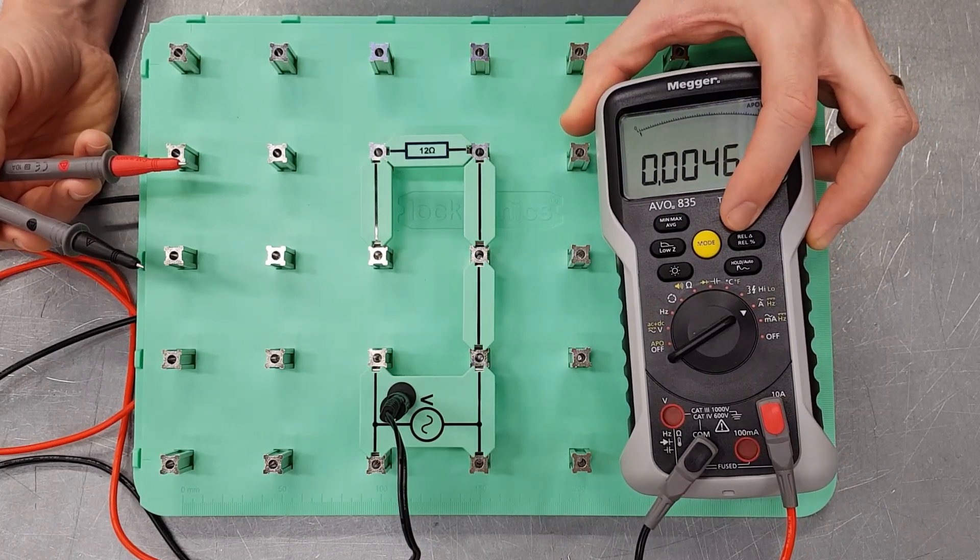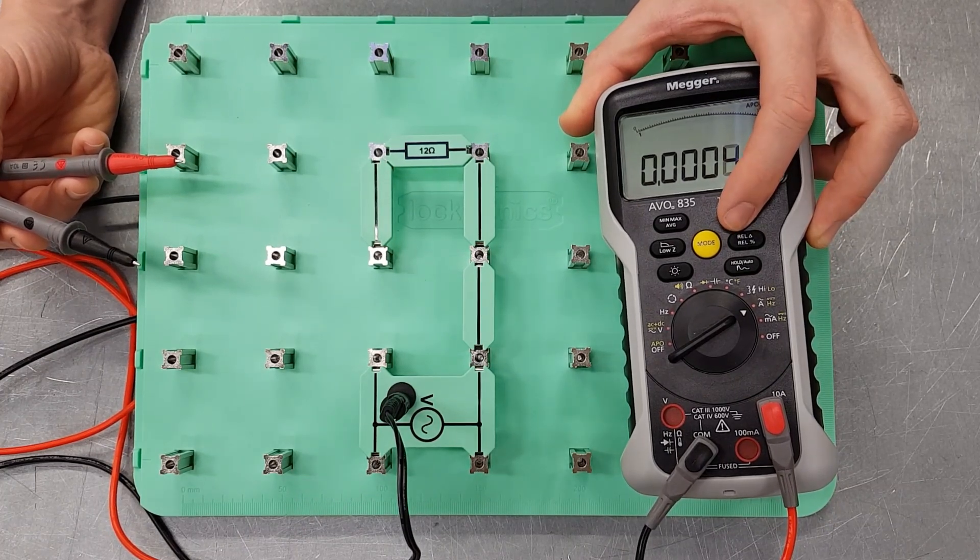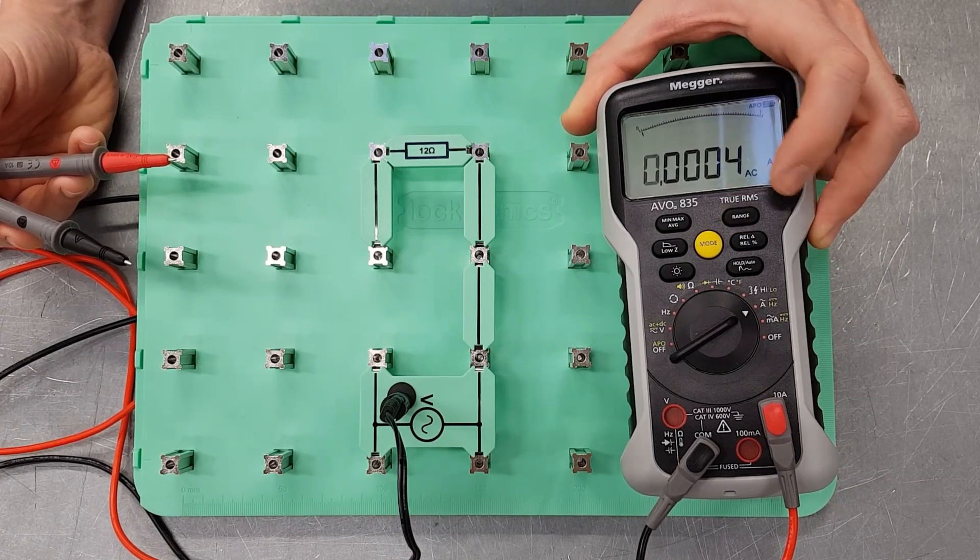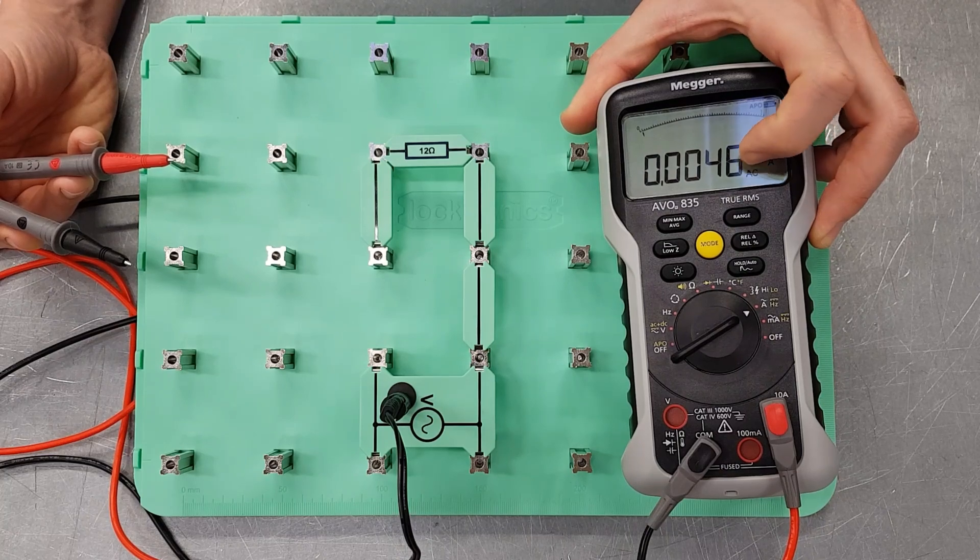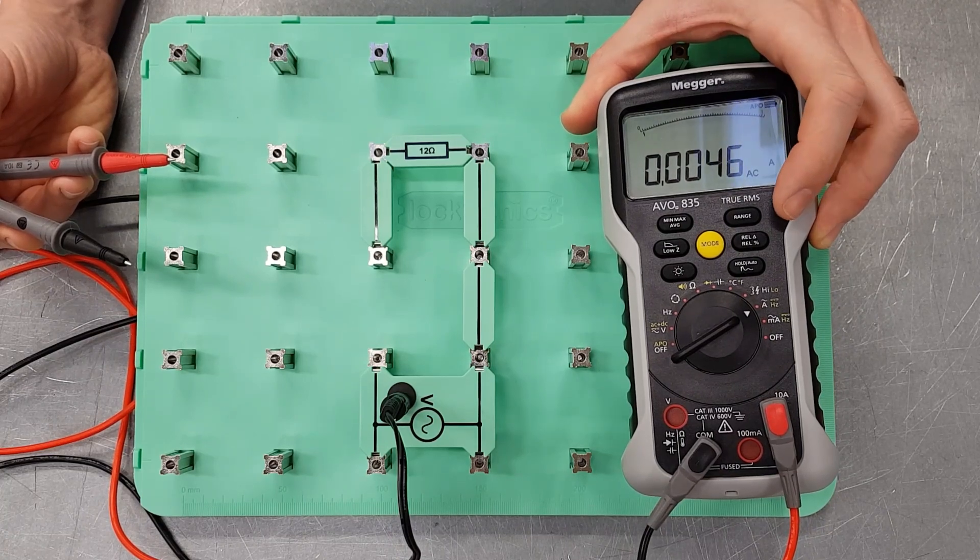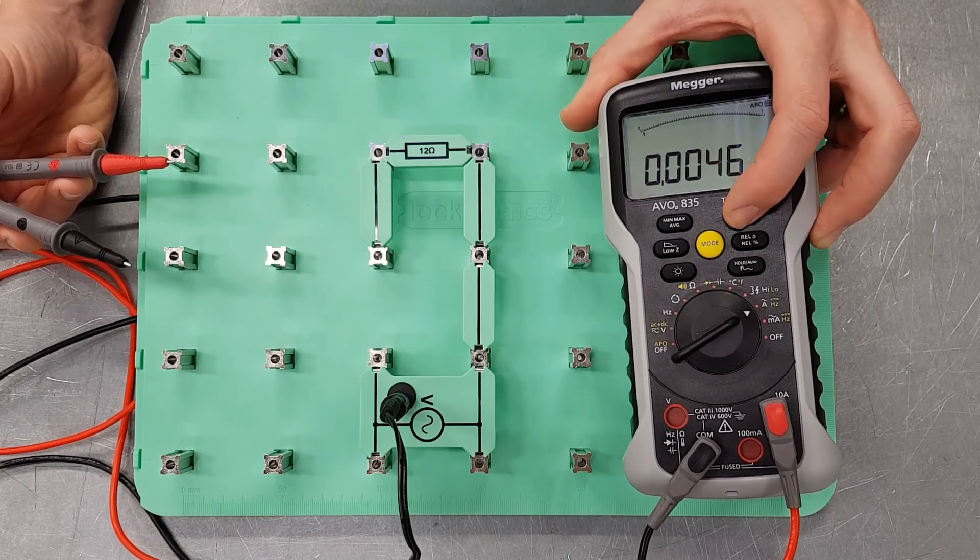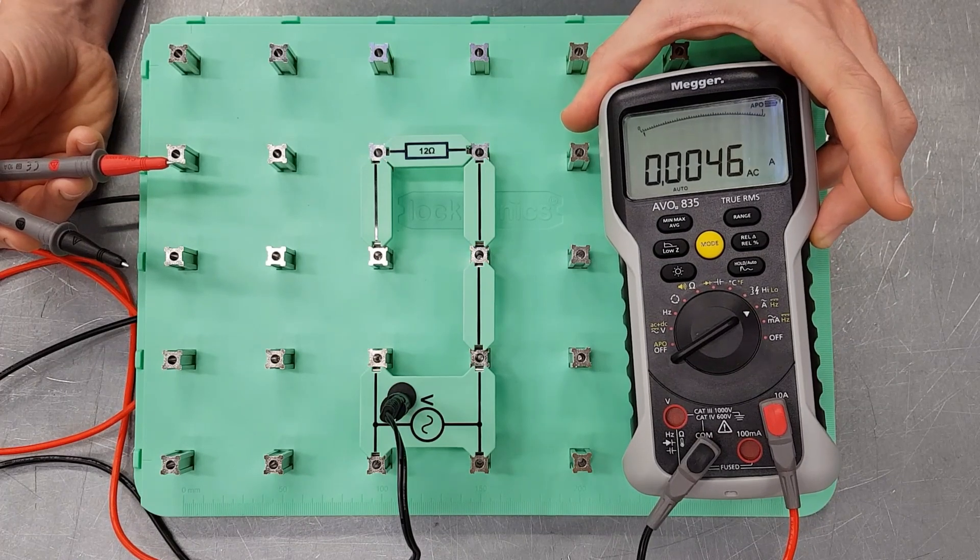You can tell it what range you want it set into. If you keep pressing the range button there, you can see that what happens is the decimal point moves about. So you can see there that's going to change how many decimal points we get at the end of that value. So if we're measuring very small currents, we'll be able to get quite a small reading out of that. And if we want to go back into the auto ranging mode, just do a long press on the range button on this meter, and that will return you to the auto mode.